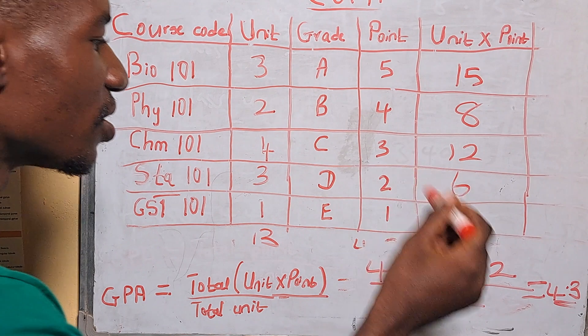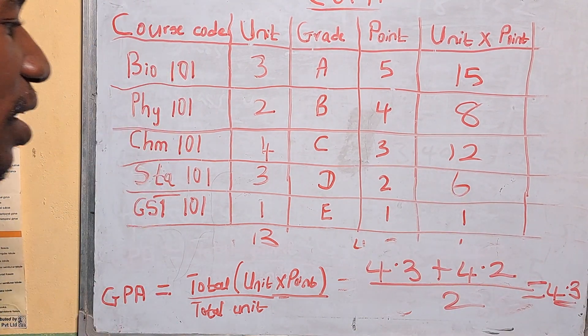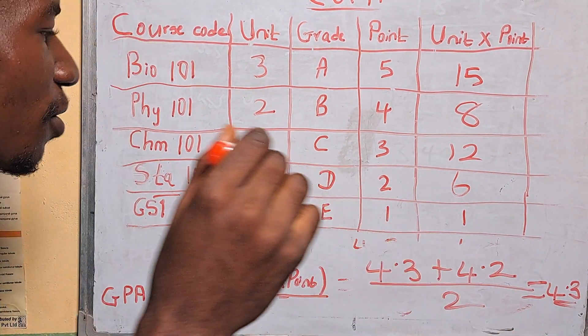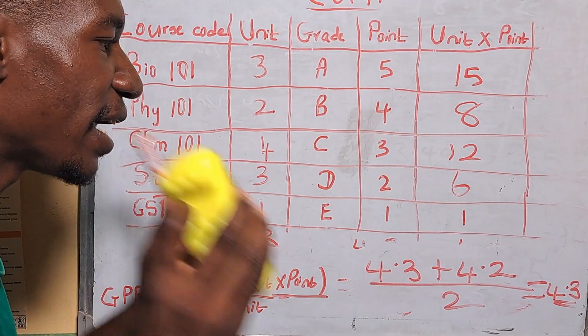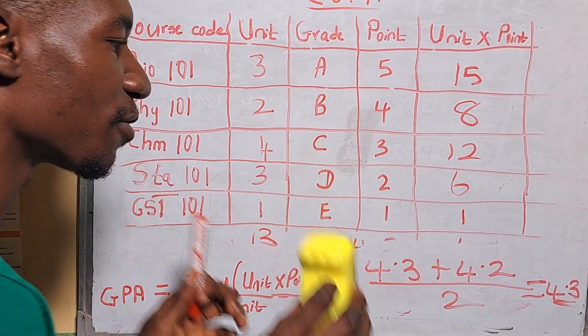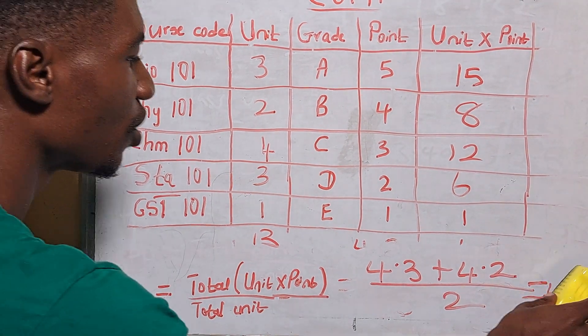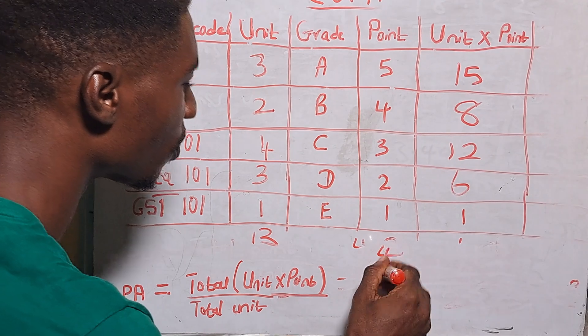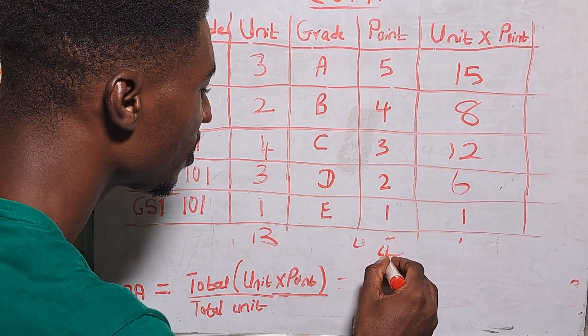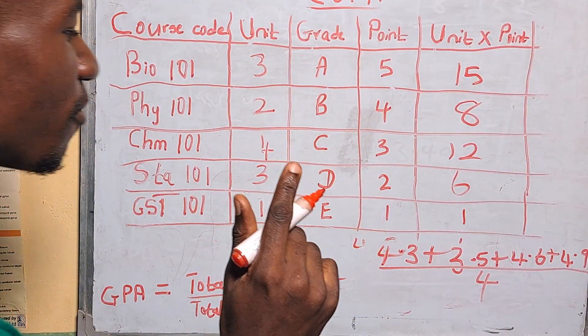So it means that this is the CGPA for the session, that is let's say this is the first year result. So this is your CGPA for your first year result. Now you use this method to calculate for your second year, third year and your final year. But to calculate the final CGPA, that is for students in their final year, this is what you have to do. You have to have the CGPA for each of the sessions.